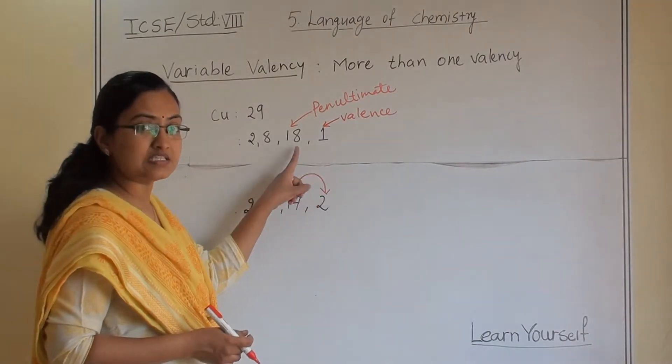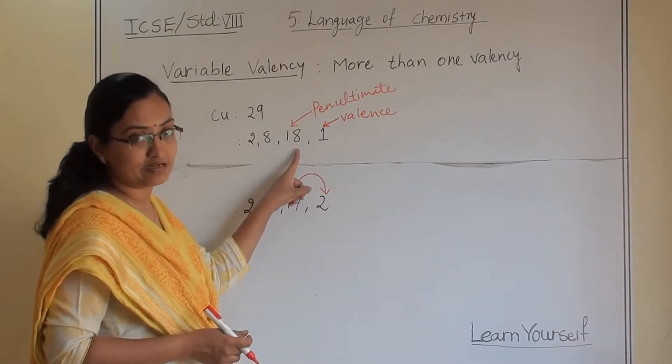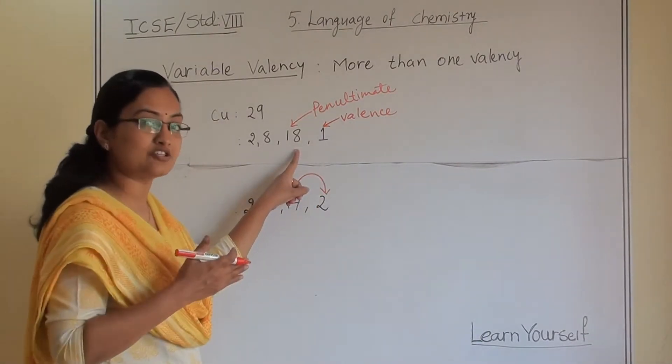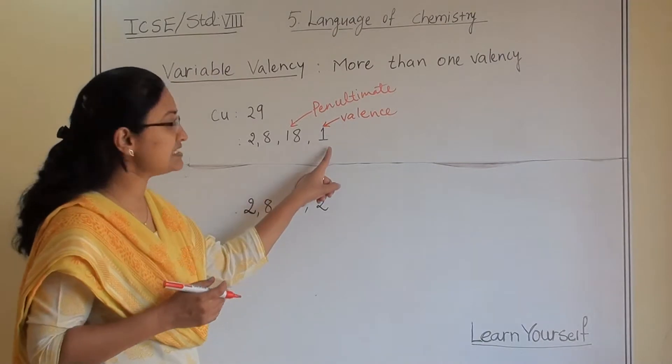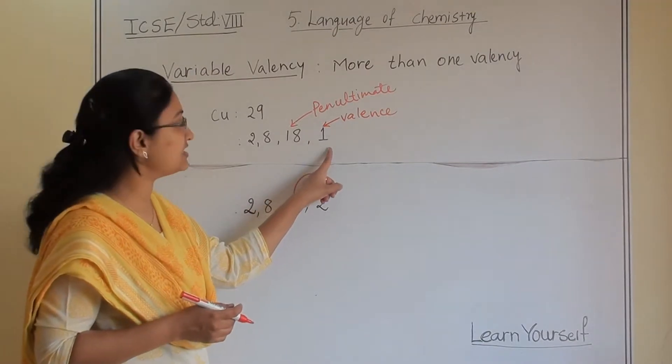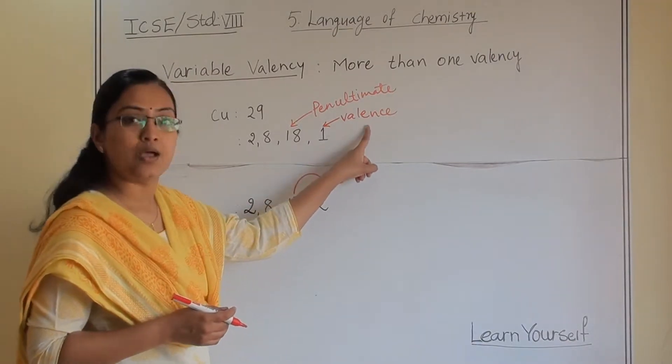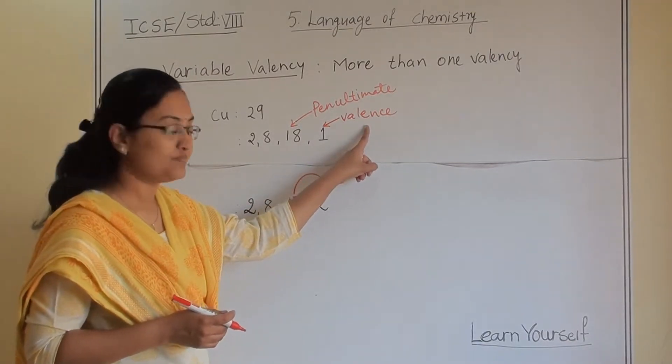This is known as the penultimate shell — that is the second last shell. This is the second last orbit, and this is known as the valence shell.